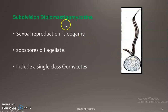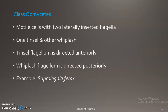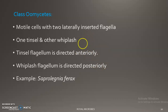Next is subdivision Diplomastigo mycotina. Here sexual reproduction is mainly by oogamy, and biflagellated zoospores are seen. It includes a single class — Oomycetes. Class Oomycetes has motile cells with two laterally inserted flagella — not anterior or posterior, but laterally inserted.